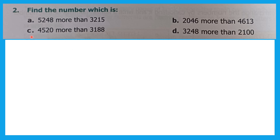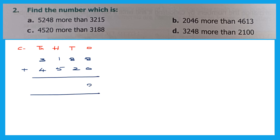Now question C: find the number which is 4,520 more than 3,188. Write the places: ones, tens, hundreds, thousands. Write 3,188 plus 4,520. 8 plus 0 is 8. 8 plus 2 is 10, carry 1. 1 plus 5 plus 1 is 7. And 3 plus 4 is 7. The number which is 4,520 more than 3,188 is 7,708.